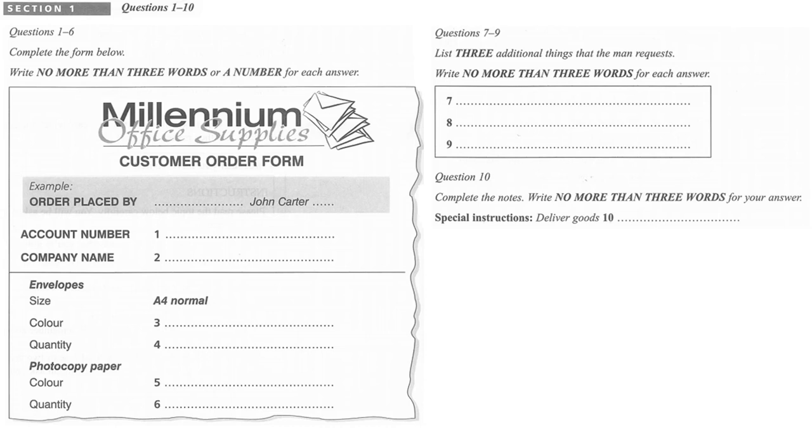The man says his name is John Carter. Now we shall begin. You should answer the questions as you listen because you will not hear the recording a second time. Listen carefully and answer questions 1 to 6. Thank you for calling Millennium Office Supplies. If you would like to place an order, please press 1. Your call has been placed in a queue. A customer service operator will be with you shortly.